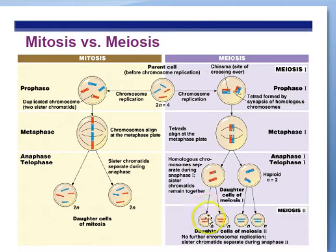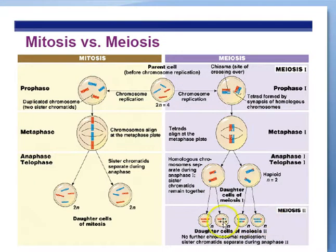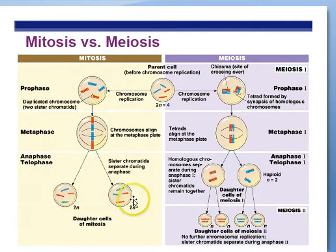The haploid cells at the end of meiosis are only going to be single-stranded chromosomes, not double-stranded. Notice that the four cells made by meiosis are genetically different from the starting cell, whereas the four cells made by mitosis are the same as the starting cell.